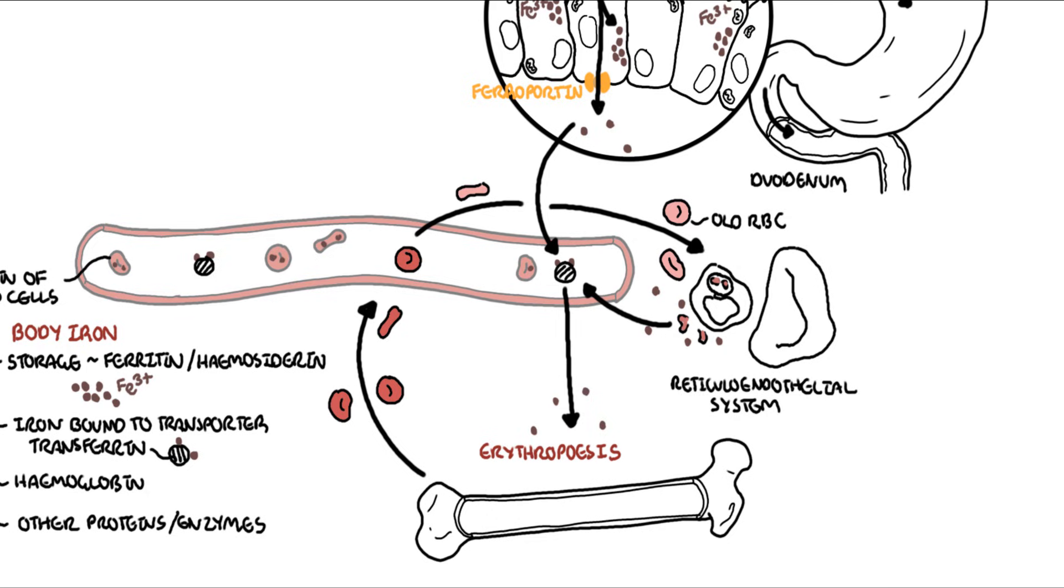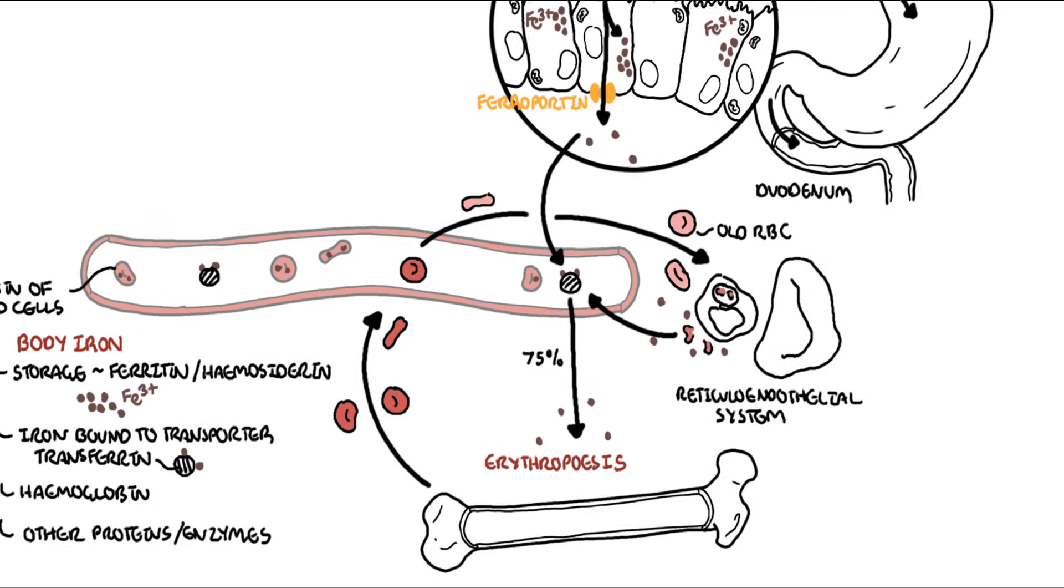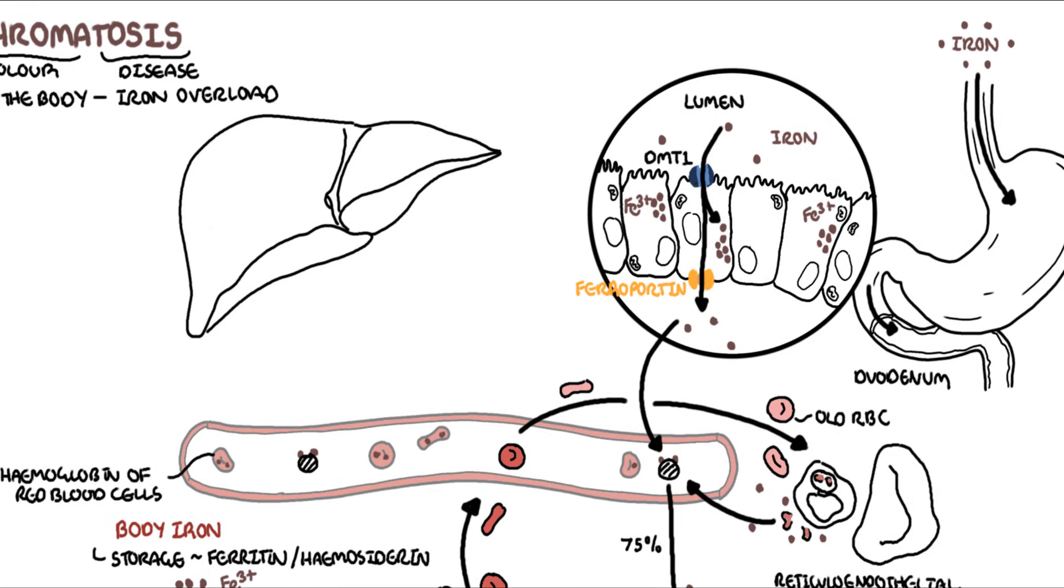It's really important to know that the majority of the iron that we take in gets put into erythropoiesis because we need more red blood cells. The remainder goes into other tissues and organs, but mainly the liver. The liver can also store iron as ferritin. The liver also produces this important protein called hepcidin.